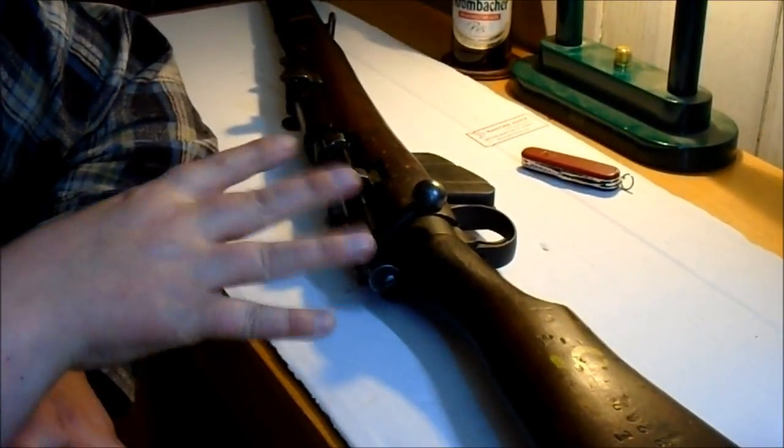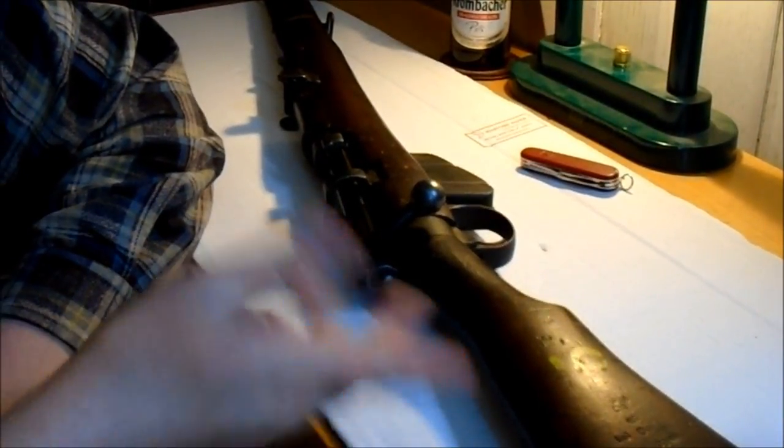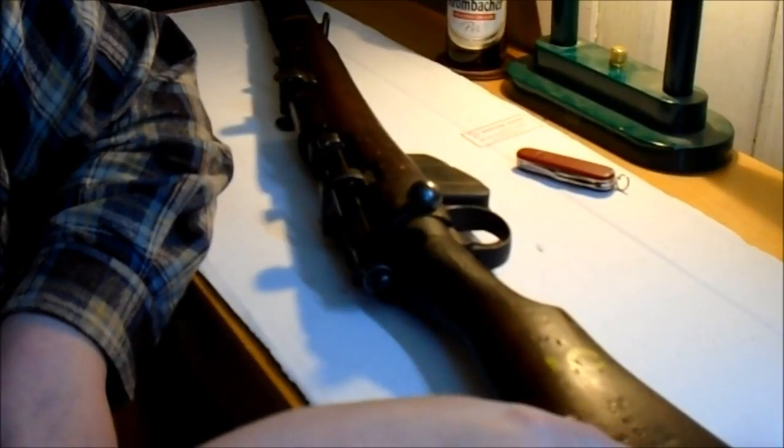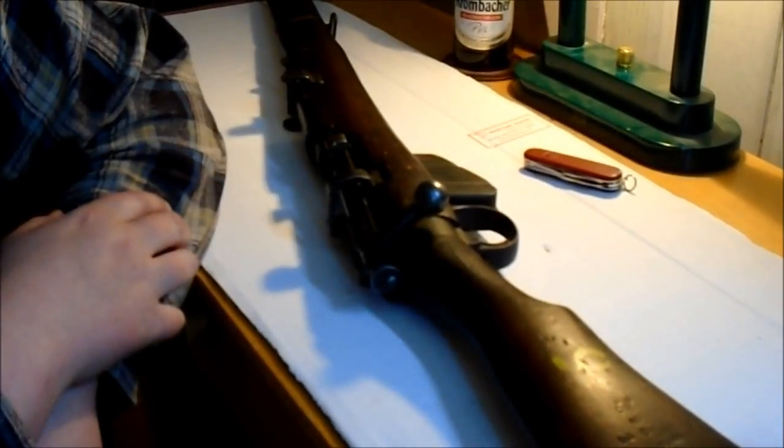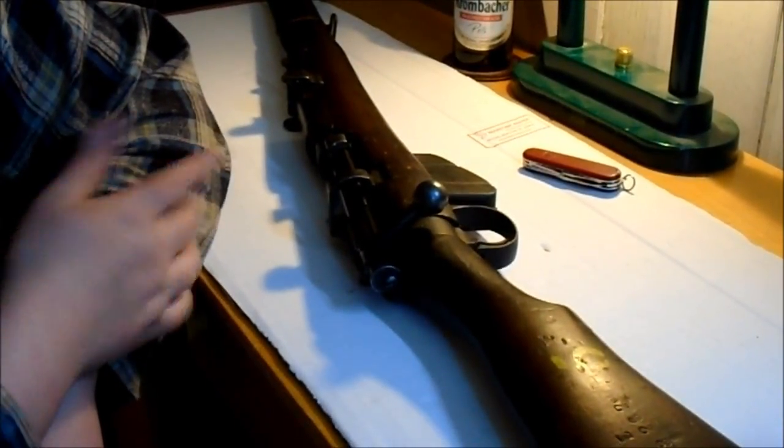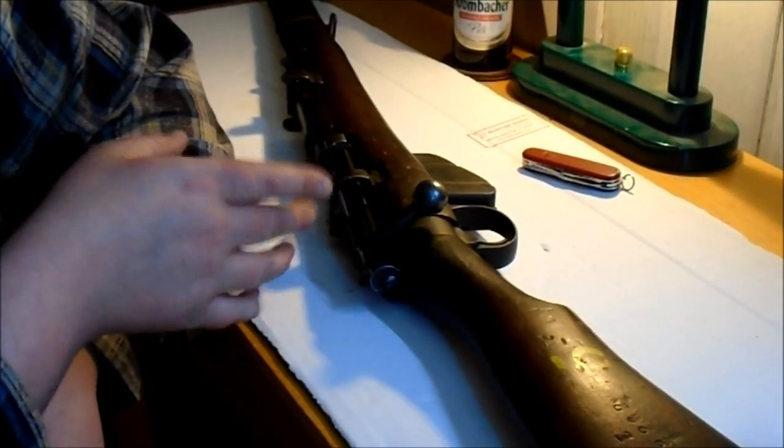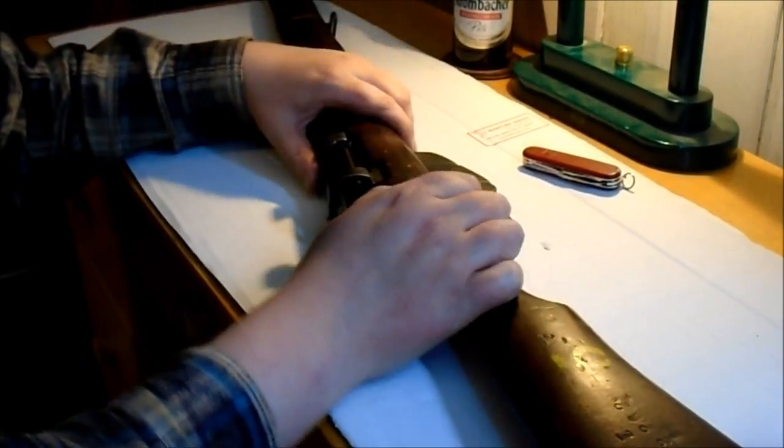Okay, this is the 43 Lithgow. I guess it was assembled in 44 because that's what the stock says. The barrel says January 44. The action looks like it says 43. It's sort of half-stamped.